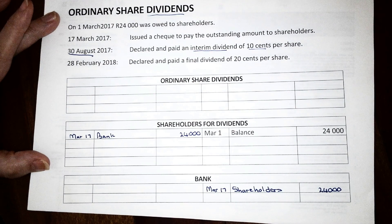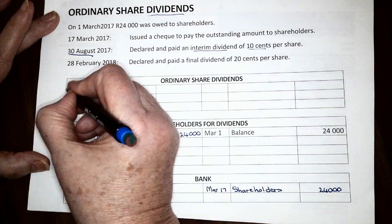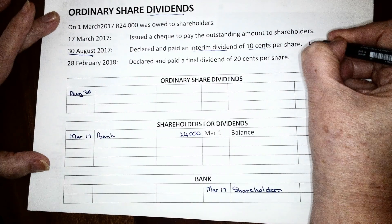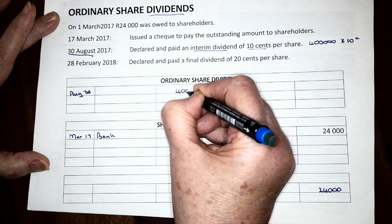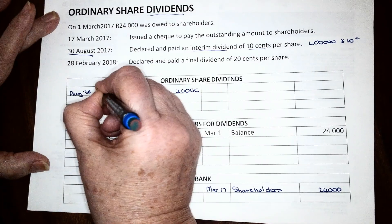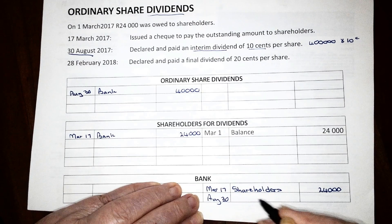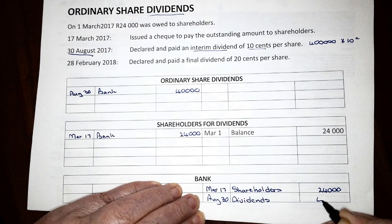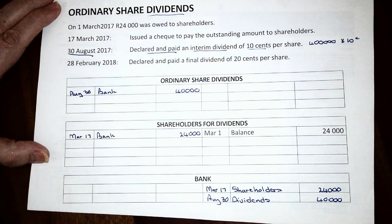If we remember from the previous page, the new shares were issued on the 31st of August, so they were not issued on the date that this dividend was declared. So on August the 30th, we will only pay dividends to the old shareholders — that was 400,000 shares times 10 cents, giving an expense of 40,000 Rand. In the middle of the year, dividends must always be paid immediately, because the purpose is that shareholders will receive money twice a year. So the interim dividend is always declared and paid.